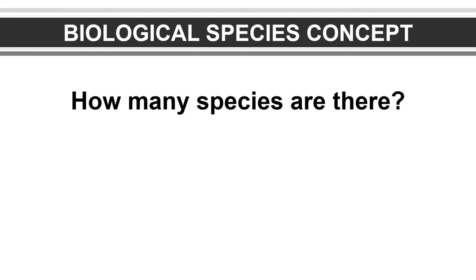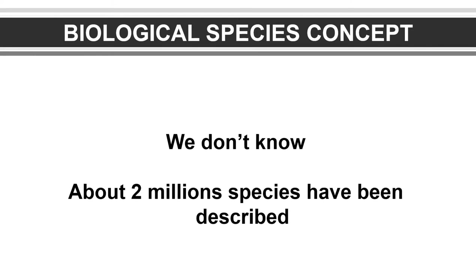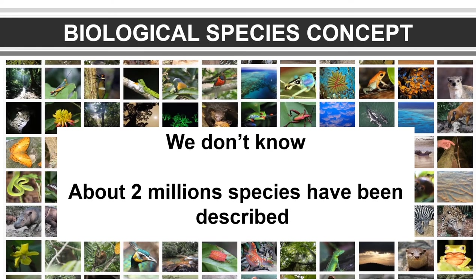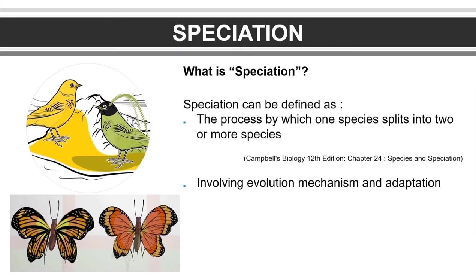Do you know how many species there are? We do not know exactly, because there are about 2 million species that have been described. And students, do you know what is speciation? Speciation can be defined as the process by which one species splits into two or more species, involving evolution mechanisms and adaptation.